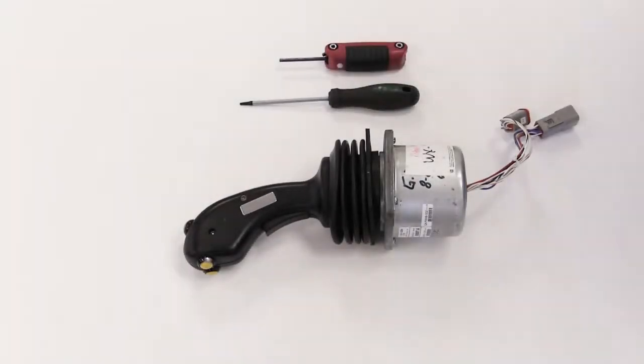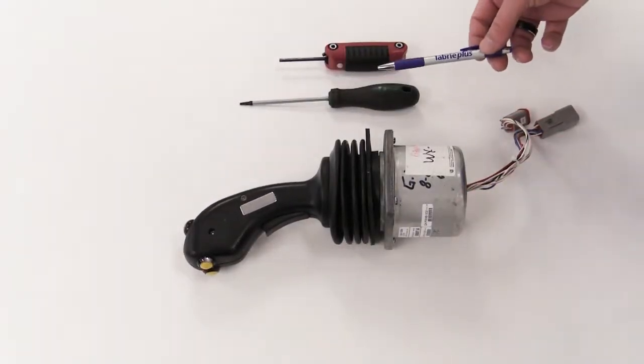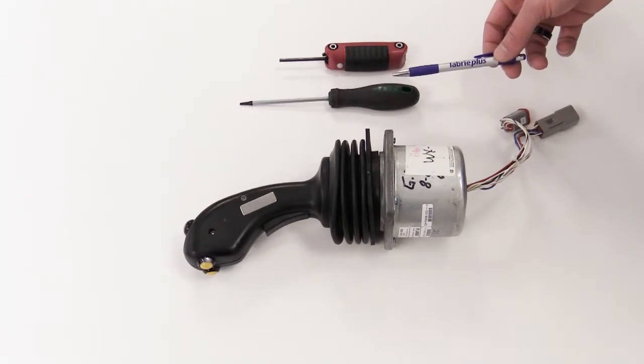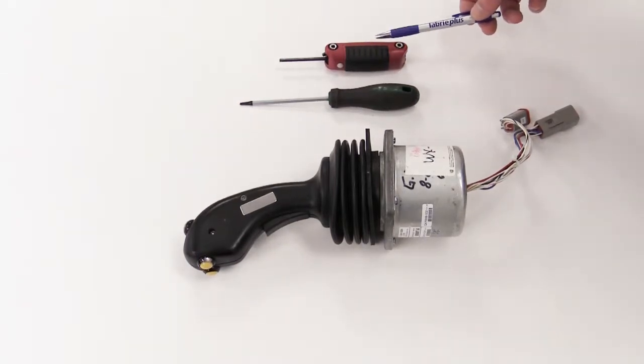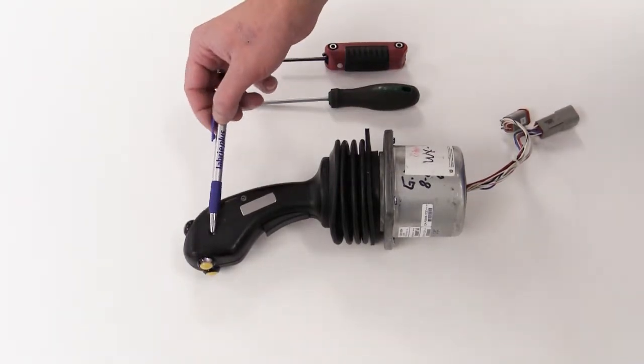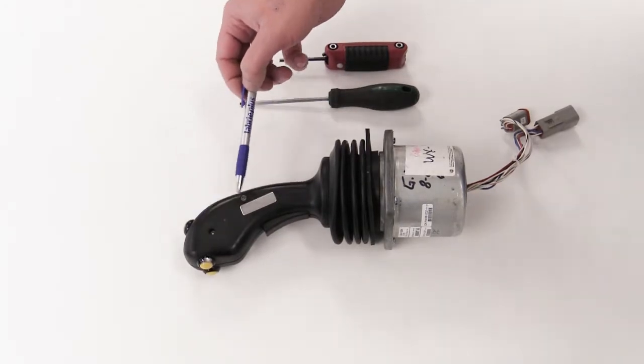To begin disassembly of the joystick, you're going to require a T15 Torx driver bit and a 5/32nd Allen. The Torx driver will be required to remove these two screws located at the top of the stick.